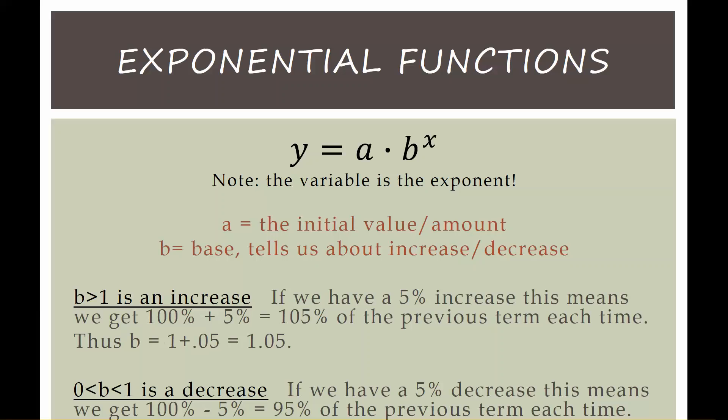Our exponential functions have this general form of y equals a times b to the power of x, and the variable is the exponent, which is what makes it an exponential function. a is the initial value or initial amount of whatever we're modeling, and b is the base, which tells us about our percent increase and decrease.